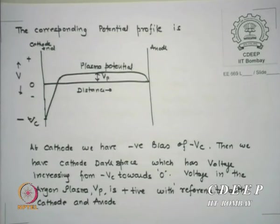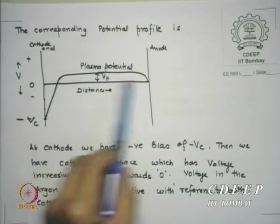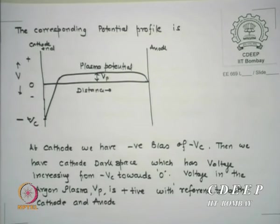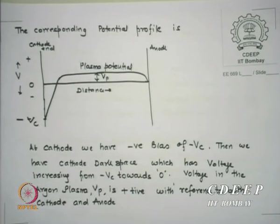The voltage in the argon plasma is positive with reference to both cathode and anode. Now, argon ions are in the plasma and they are moving towards the cathode, getting accelerated because of the electric field we have applied. So these argon ions will bombard the cathode. That boundary between implantation and sputtering — where implant starts and sputtering ends — will become clear when we discuss this.